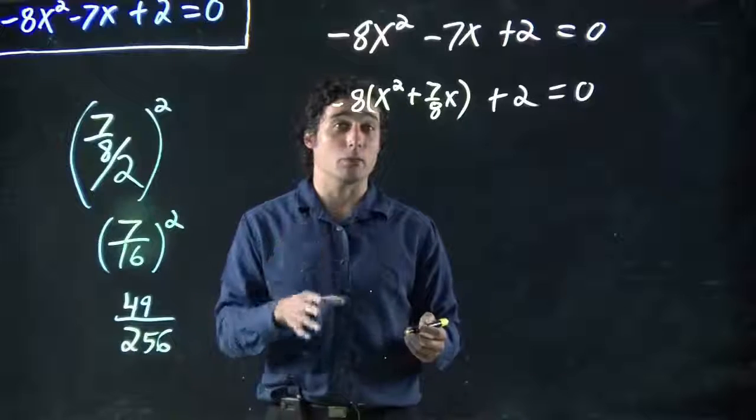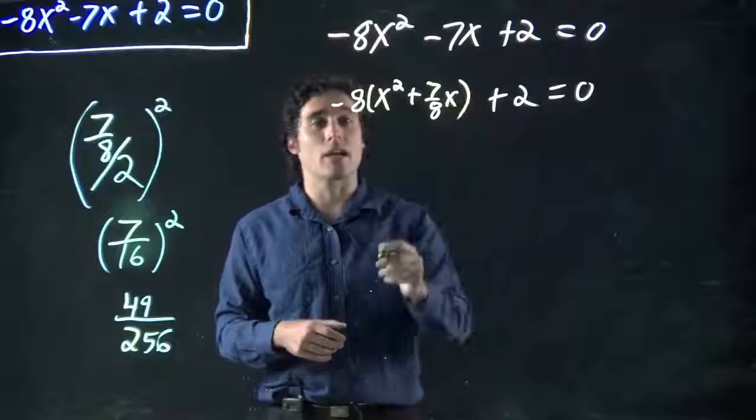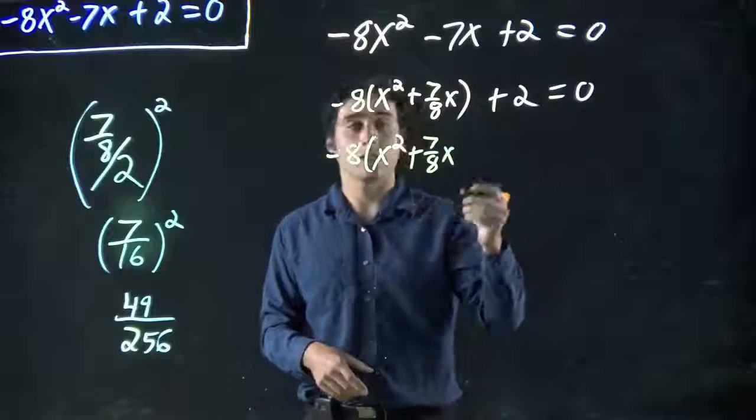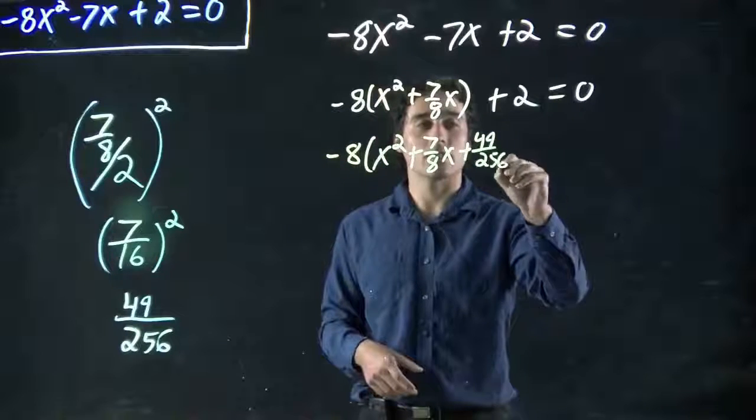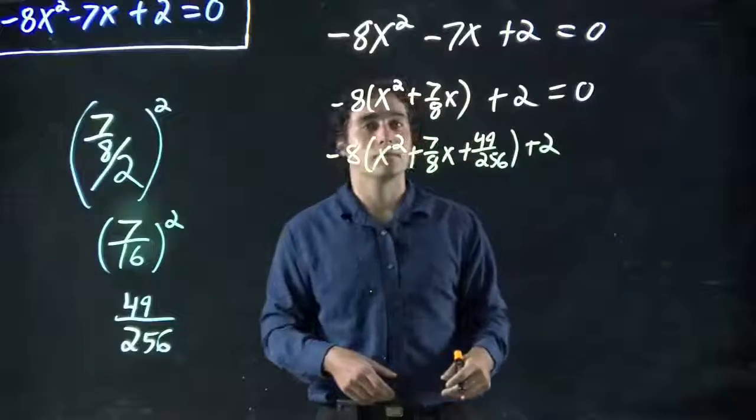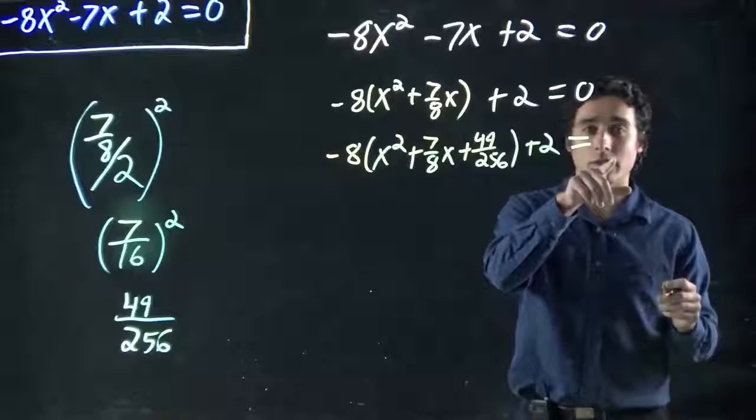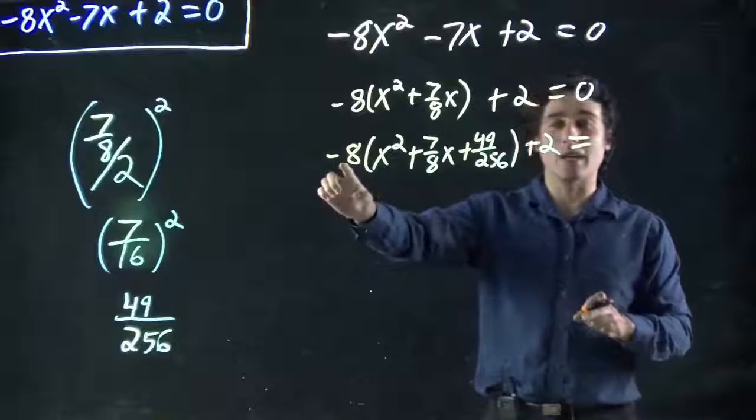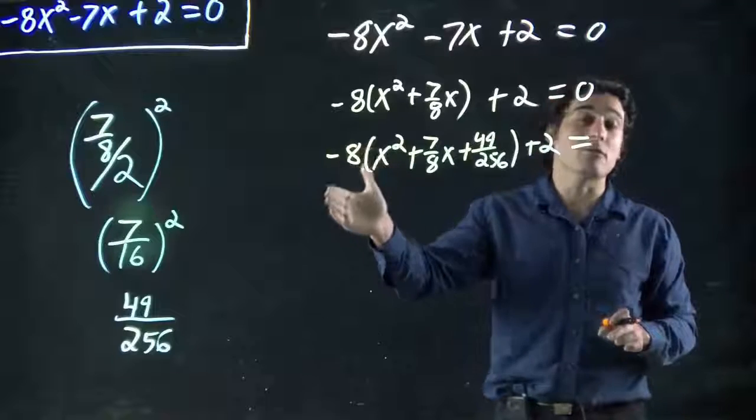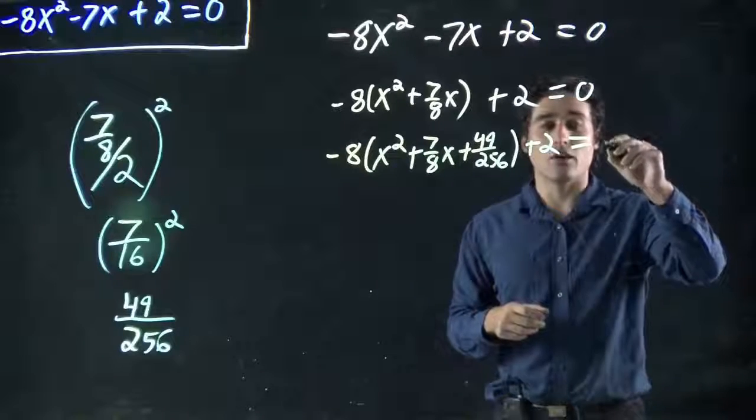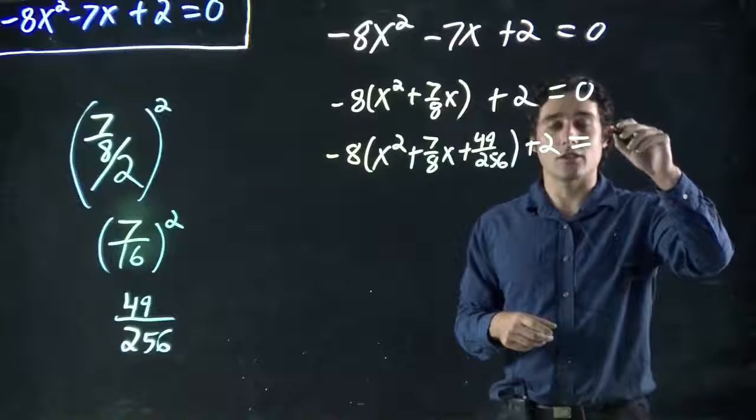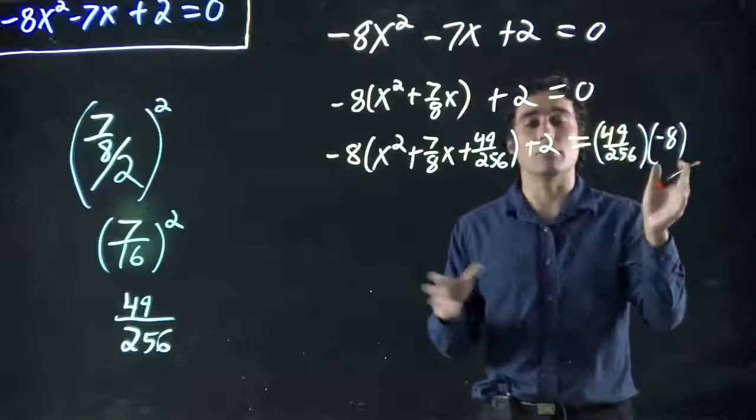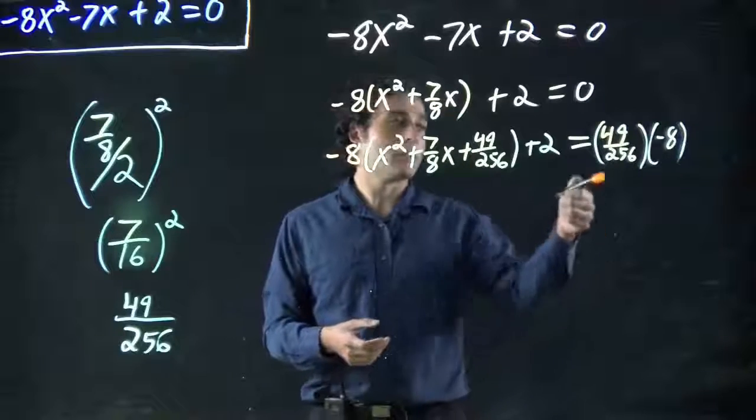And that's what we're adding into both sides, remember. So, we're adding that into the bracket here. Minus 8, x squared plus 7 over 8x, and then plus 49 over 256, plus 2. Remember, we have to add it to this side too. But we've got to be a little careful. We didn't just add 49 over 256. What we did is add 49 over 256 times minus 8. This whole part we added was in the bracket. So when we're adding to this side, we also have to consider that. We're actually adding this 49 over 256 times minus 8.